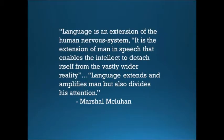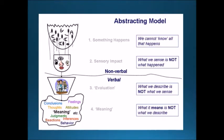McLuhan said: language is an extension of the human nervous system — the extension of man — and speech enables the intellect to detach itself from the vastly wider reality. Language extends and amplifies man, but also divides his attention. This is the abstracting model.